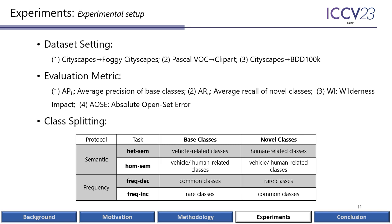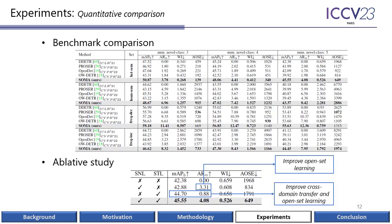In our experiments, we designed three dataset settings and four types of class splits to fully simulate different real-world scenarios. Our method can surpass the latest works on both base class and novel class evaluations. Moreover, the first module can improve the novel class identification significantly, while the second module can not only enhance the cross-domain transfer, but also slightly improve the open-set learning.